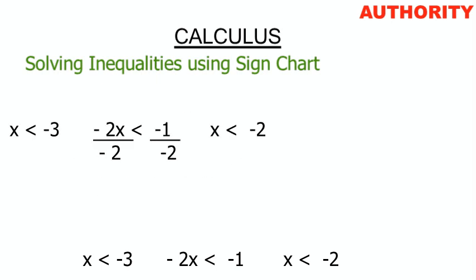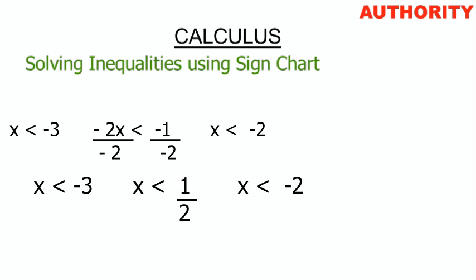Going back to -2x < -1: we need x, not -2x, so we divide both sides by -2. This gives x > 1/2 (the inequality flips). So our three critical values are x < -3, x > 1/2, and x < -2.